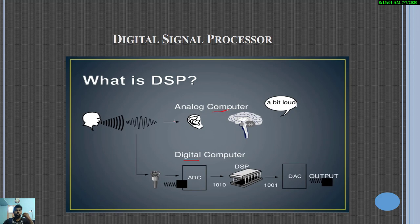In analog, our human brain is considered as an analog computer, where the analog signal is processed through our ear. But in a digital computer, the signal is received by a mic. Here we can see a mic, and it is first converted into a digital signal by using an ADC converter, and this digital signal is processed in a DSP processor.